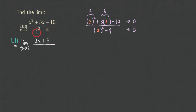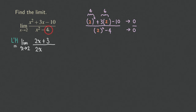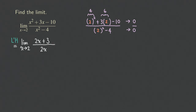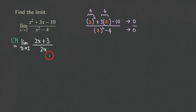For the denominator, the derivative of x squared gives 2x, and the derivative of negative 4 gives 0. So the denominator becomes 2x. We now have the fraction (2x + 3) over 2x.